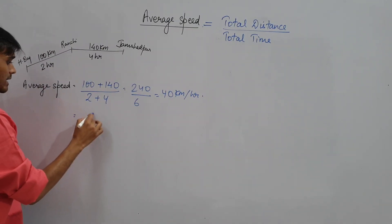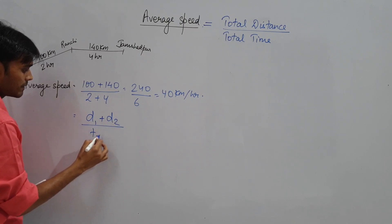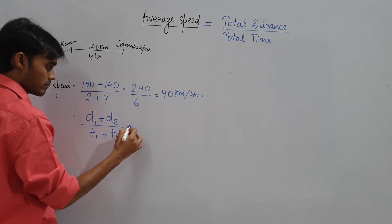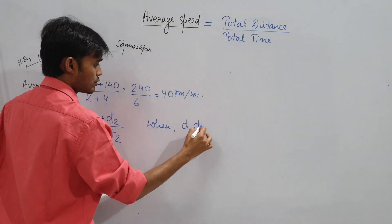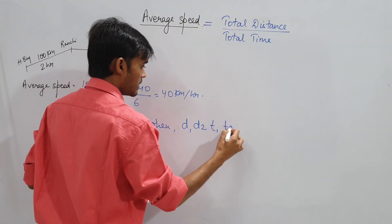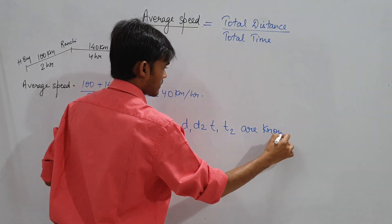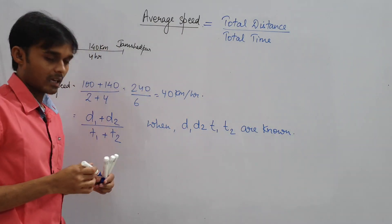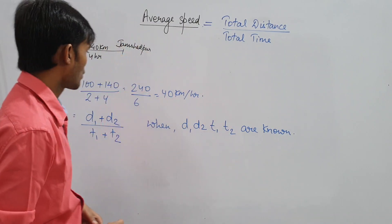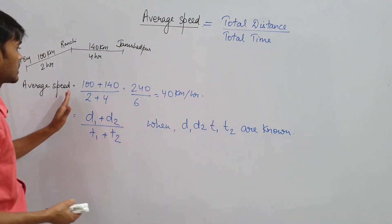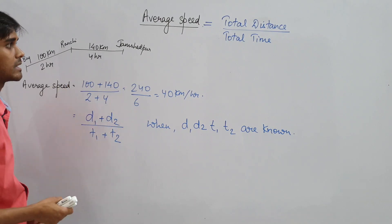That means we derive a formula: D1 plus D2, divided by T1 plus T2, when D1, D2, T1, T2 are known. If distances are directly given and times are directly given, then to find average speed, just take total distance divided by total time and you get the final answer.